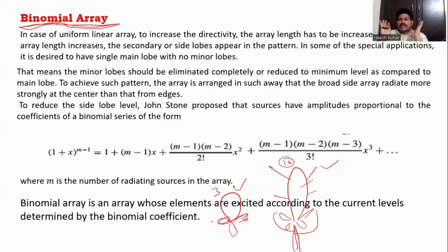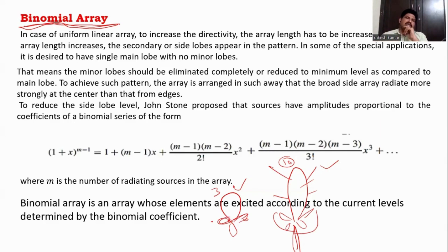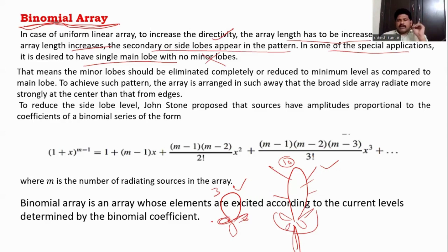In a binomial array, we can reduce side lobes and get only the major lobe. In some applications only the major lobe is required — no side lobes. In the case of a uniform array, to increase directivity the array length is increased, but when the array length increases side lobes appear. So in some applications it is desired to have a single main lobe with no minor lobes — in order to eliminate minor lobes, the technique used is the binomial array.